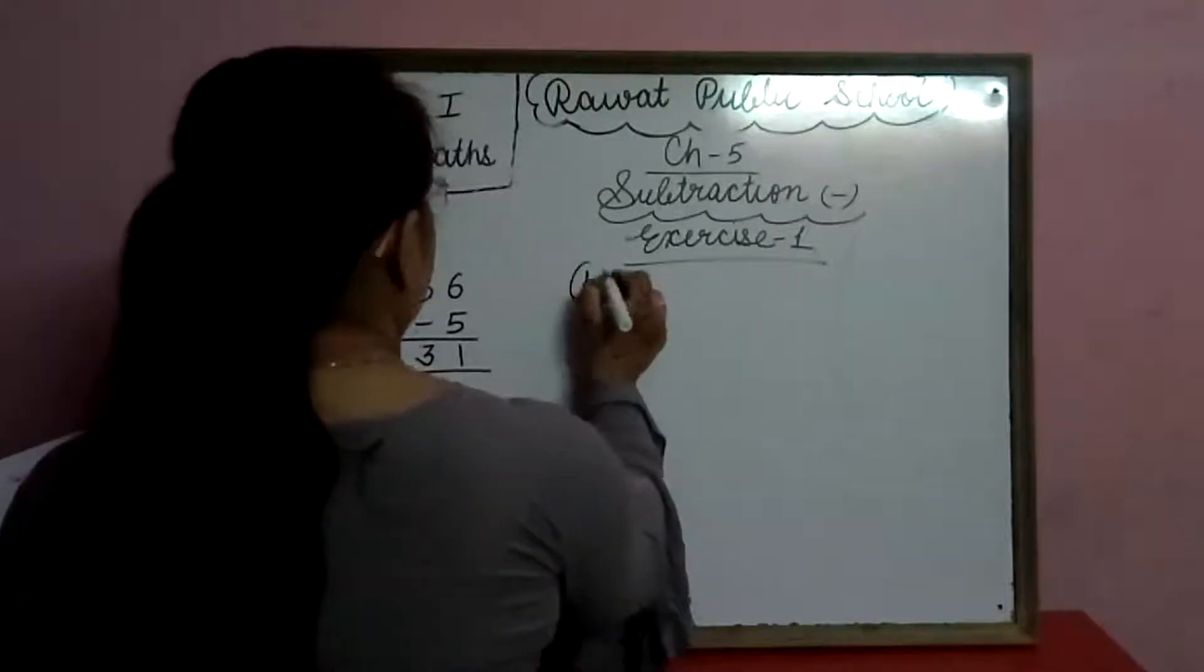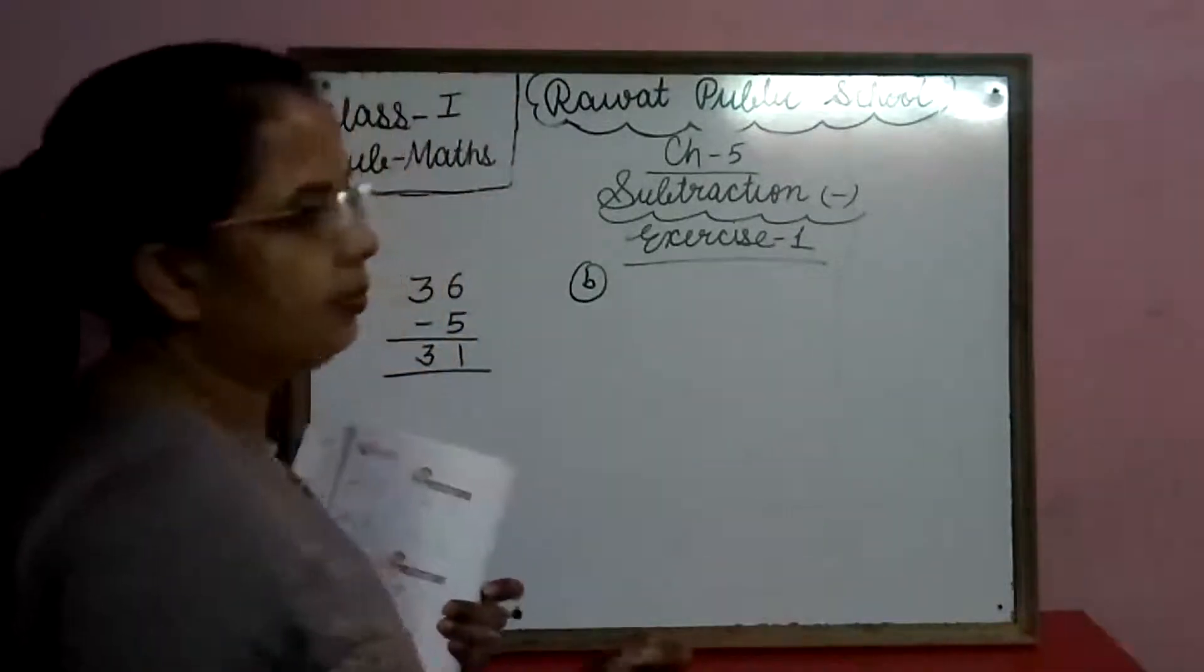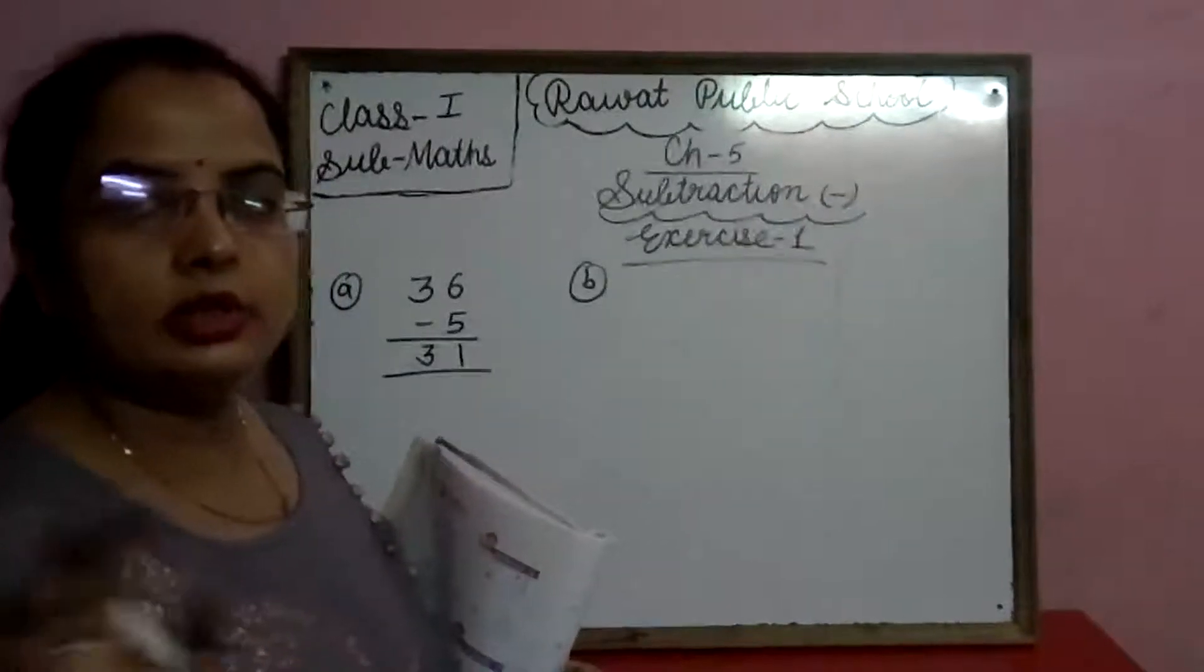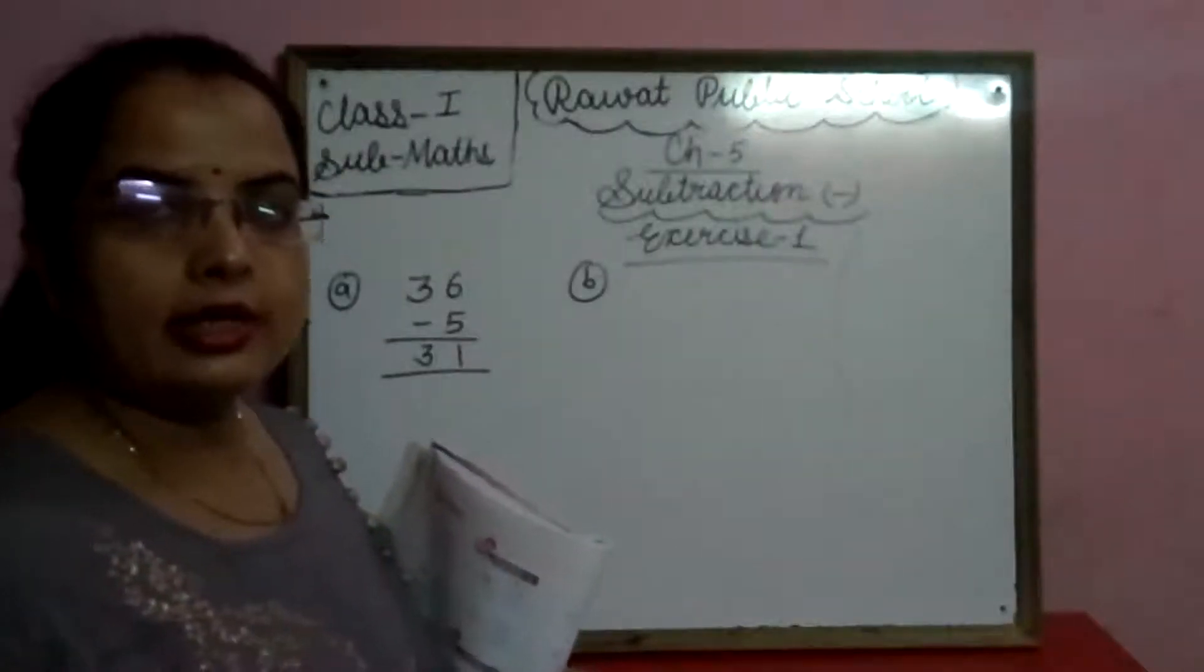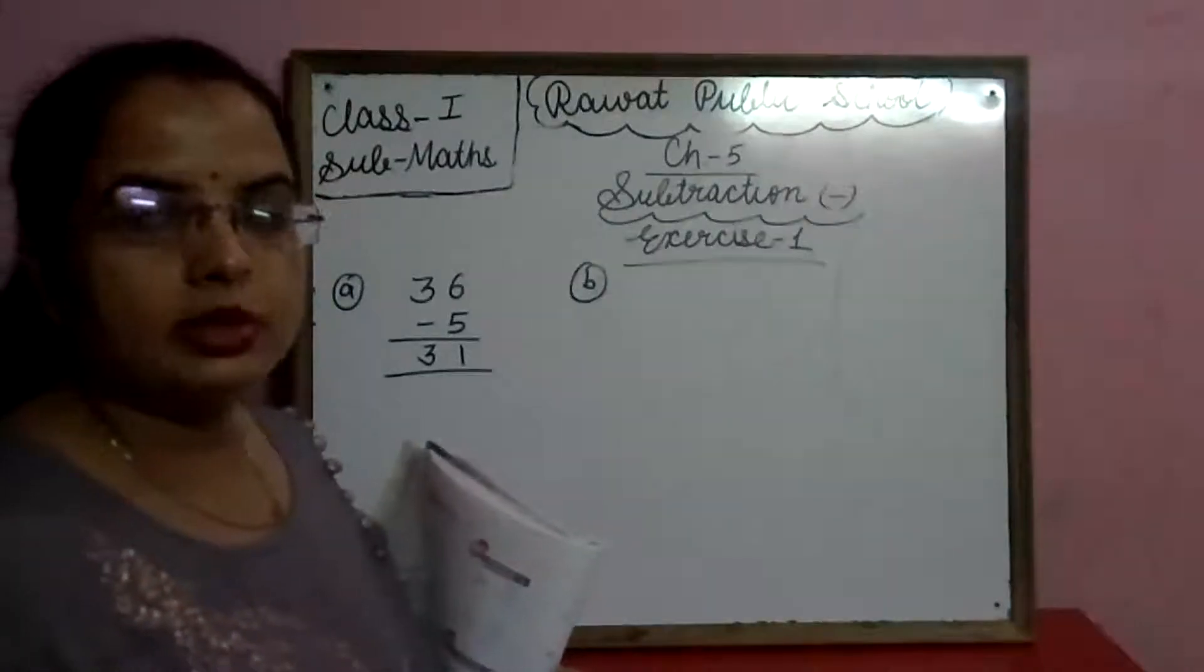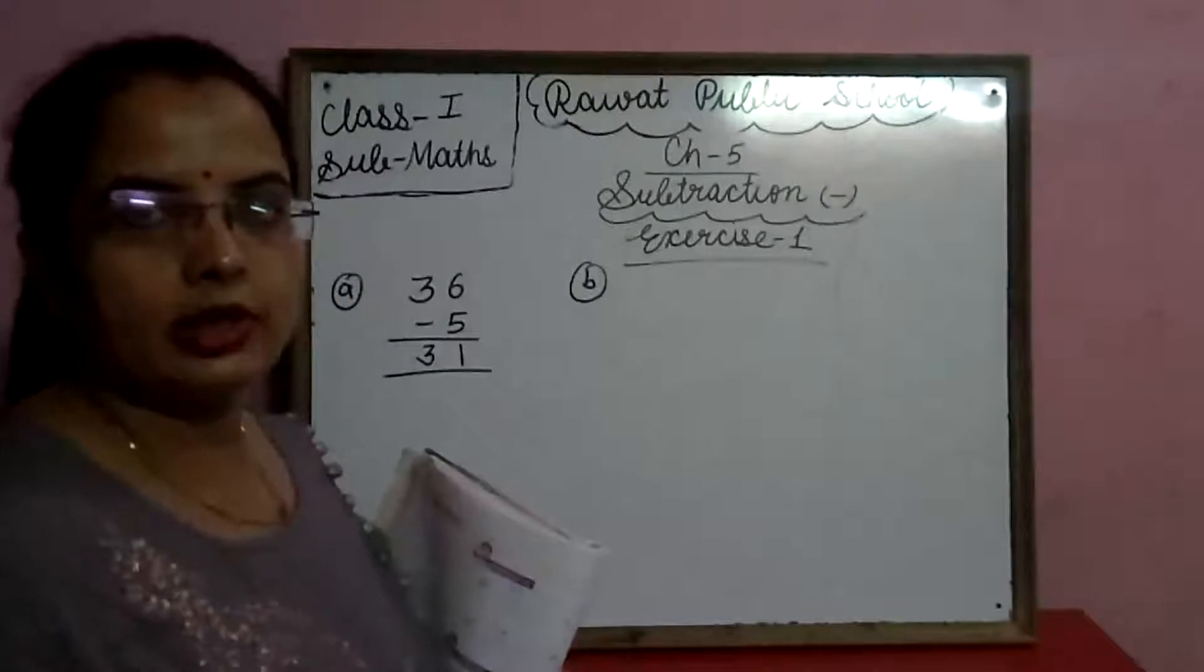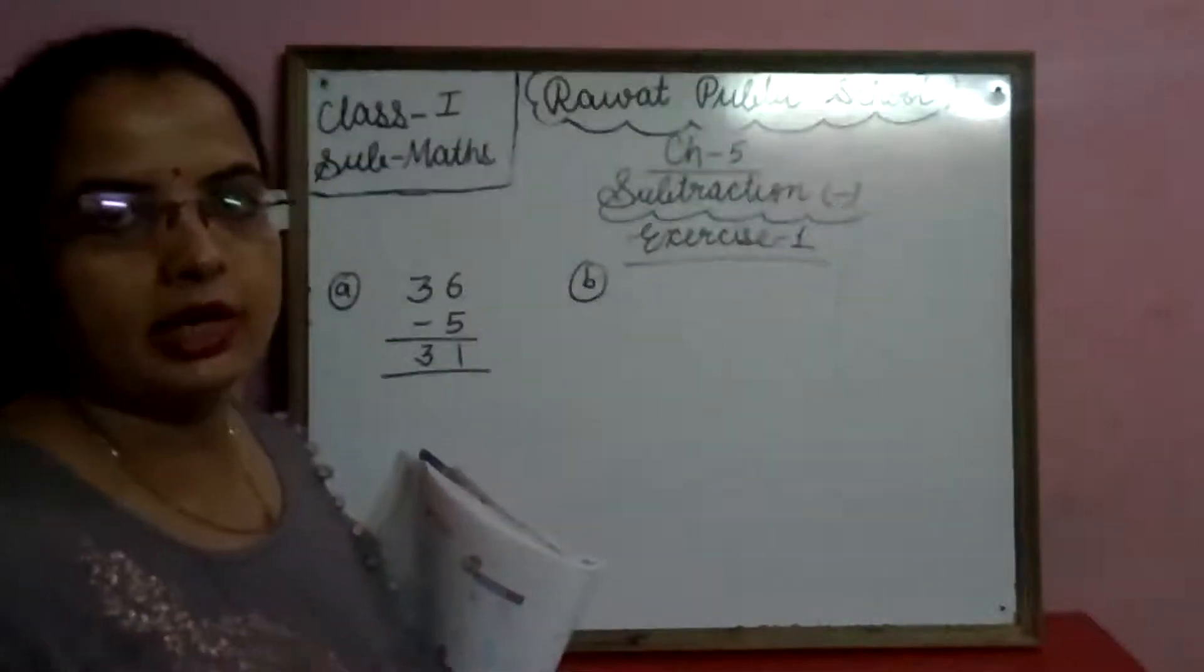B. Hame se subtraction bahut baar kar liya hai, bahut saare lectures me kar liya hai. Aap ko bane 1 digit, 2 digit banana, saareboro wale bahut accha se samaj gaya hai. Toh ye kaam bahut easy subtraction aajam kar raha hai, aap sabko accha se samaj me aahe huye.